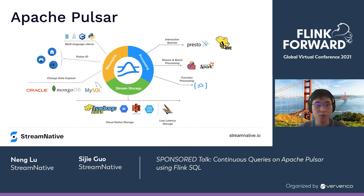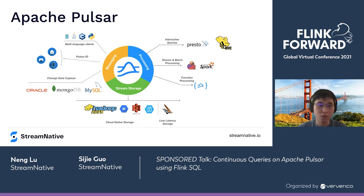For the messaging aspect, Pulsar offers multi-language clients such as Go, Java, C++, and Python. It also offers the ability to use the Pulsar I/O framework to ingest IoT data into the messaging pipeline, and allows change data capture connectors like Debezium to forward database changes into the messaging system.